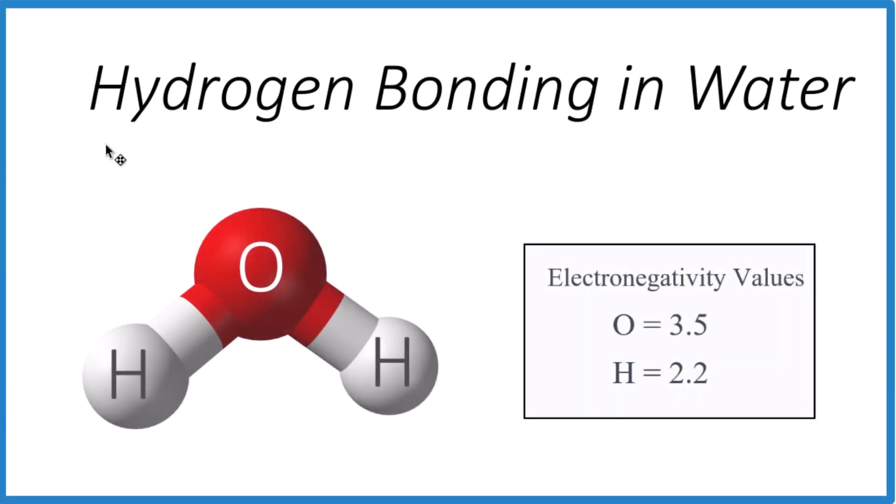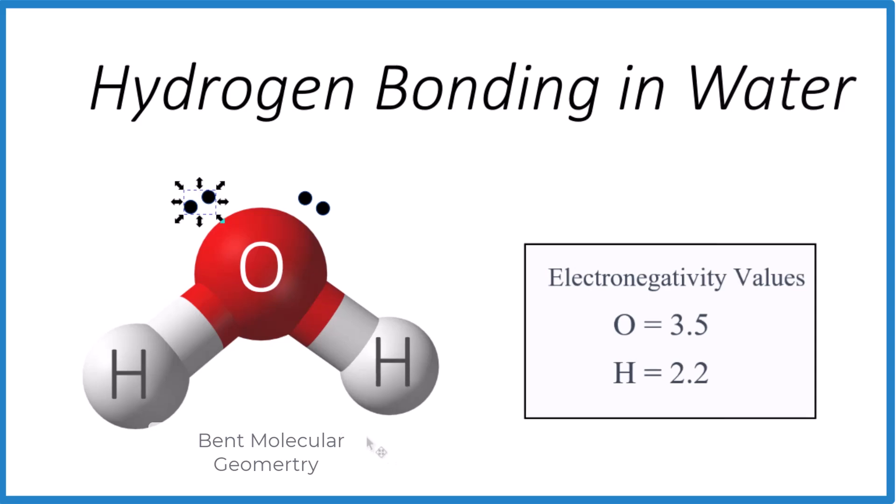Here's how you can draw two water molecules forming hydrogen bonds. We have our water molecule here with lone pairs at the top. Those lone pairs push the hydrogen atoms down, giving us that asymmetrical shape, that bent molecular geometry.